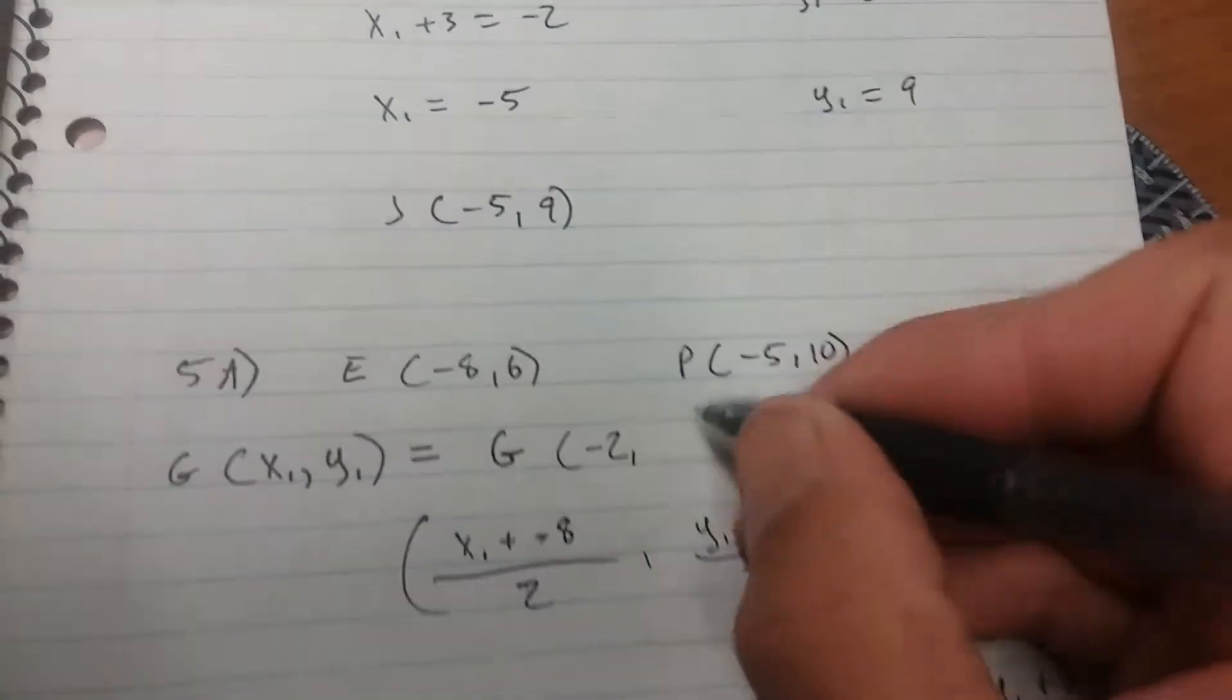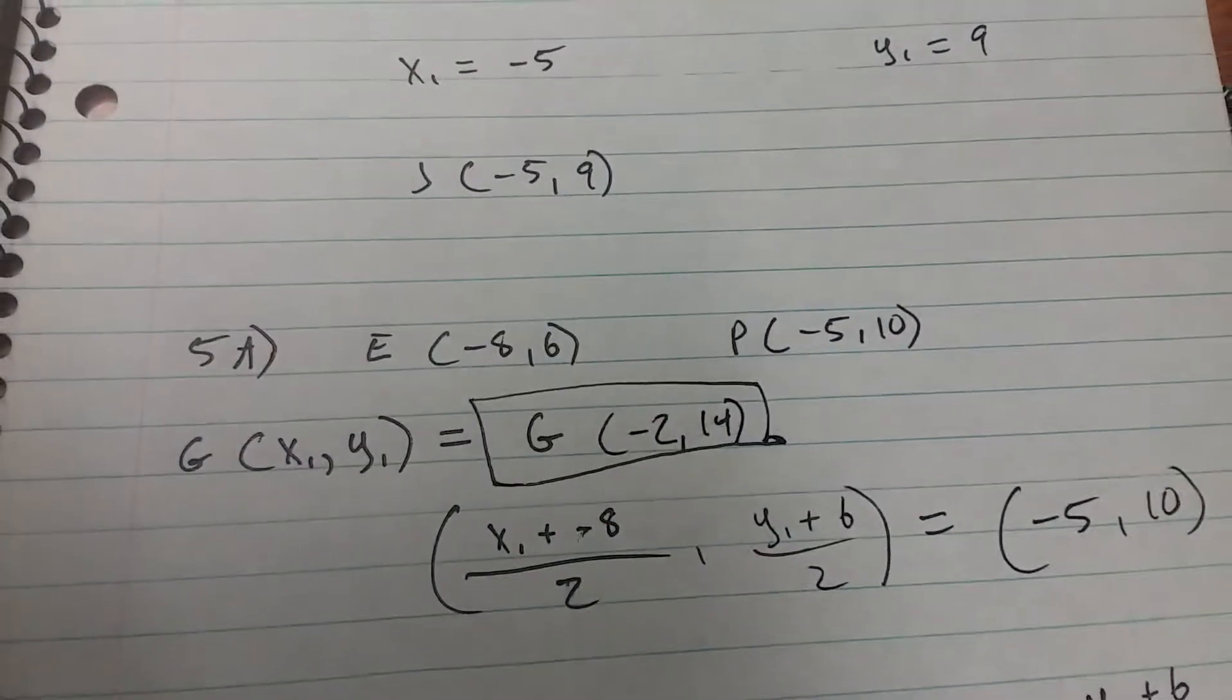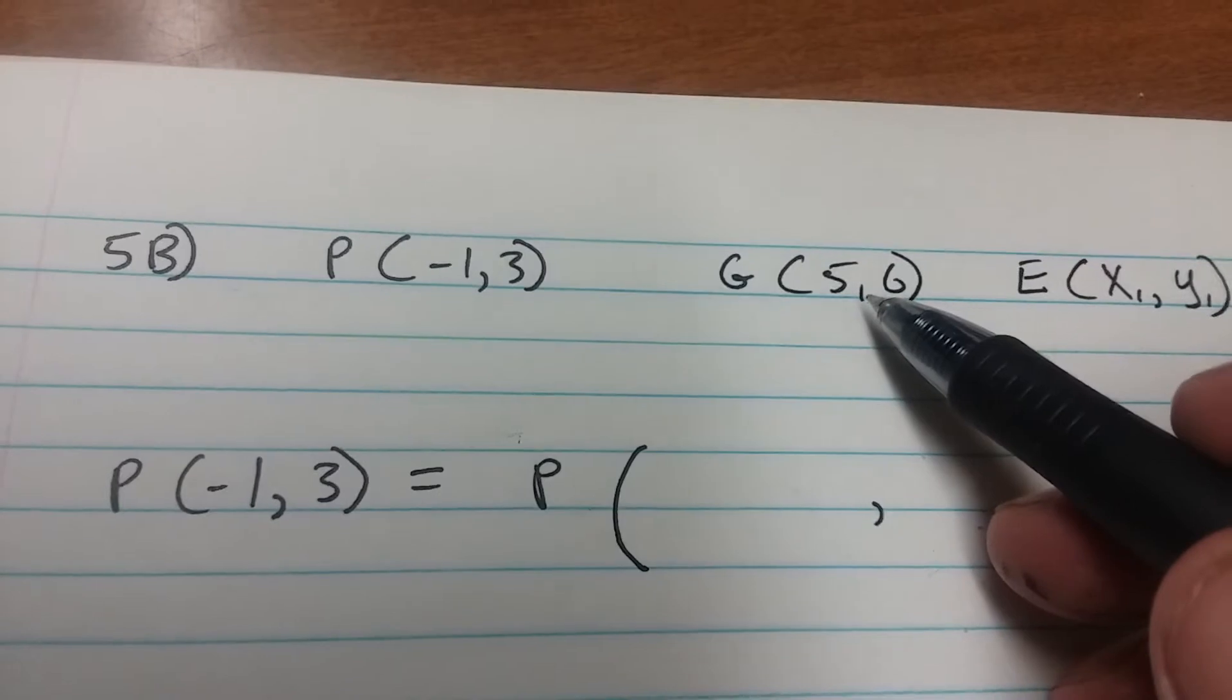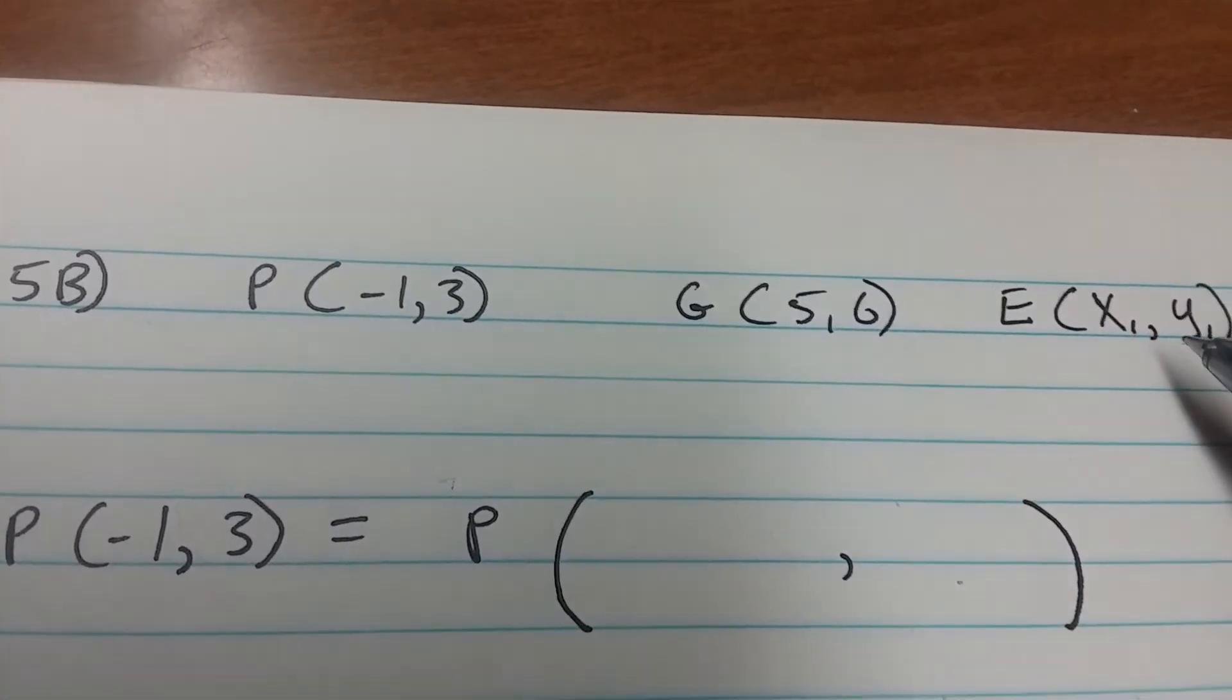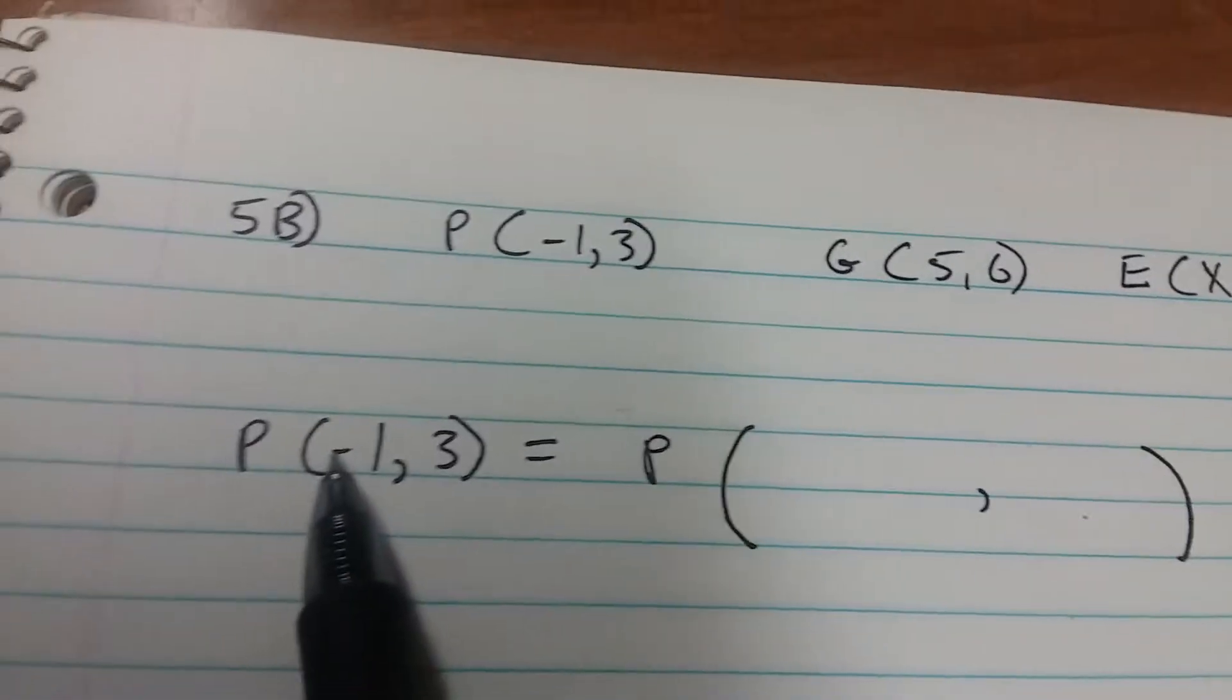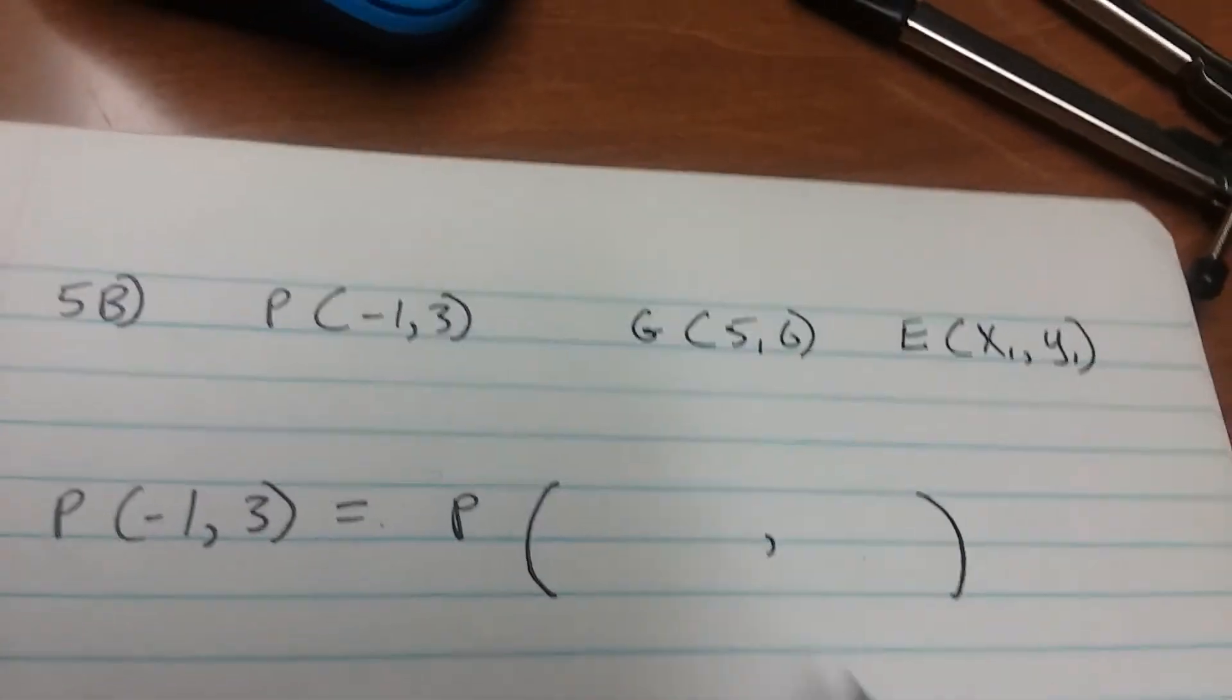Box that. That was 5a. All right, we'll look at 5b. Here we have P at negative 1, 3, G at 5, 6, and E at x₁, y₁. Remember that P is your midpoint, so P at negative 1, 3 is equal to P at x₁ plus 5 over 2, y₁ plus 6 over 2.